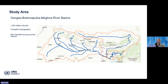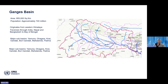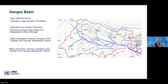Our study area is the Ganges, Brahmaputra and Meghna river basin in South Asia — a very large river basin with 1.5 million square kilometers of area. It is very complex in topography and the monsoon is very intense, with 80 percent of rainfall mainly happening during summertime. The Ganges basin is the largest, where flooding happens most. It has around 955,000 square kilometers with approximately 740 million population. The Ganges river originates from the Himalayas and travels through Nepal, India and Bangladesh to the Bay of Bengal.